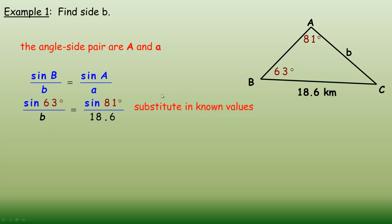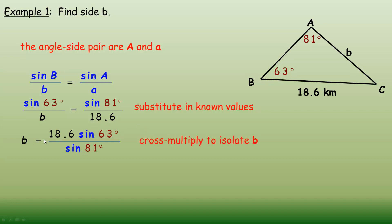Substituting in the known values: angle B is 63, angle A is 81, and side A is 18.6. The next step is to cross-multiply and isolate for B. So B equals 18.6 times sine of 63, divided by sine of 81, because sine of 81 is across from B on the diagonal.